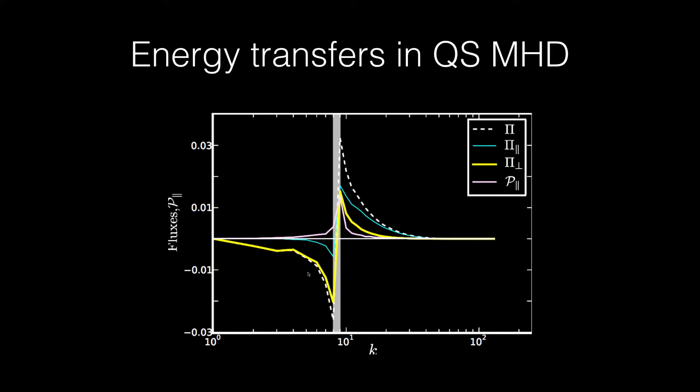In particular, we compute the energy cascade rates of u_perp, the perpendicular component, which is the yellow curve, and u_parallel, the z-component, which is the blue curve.